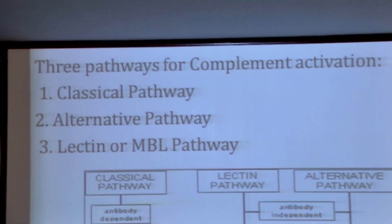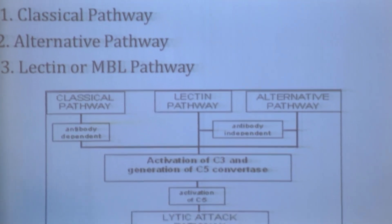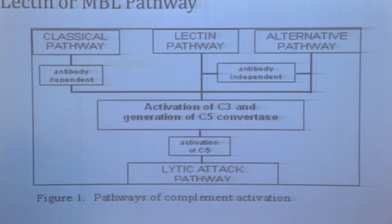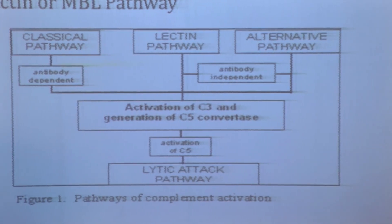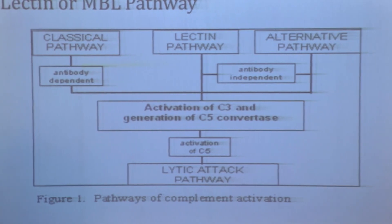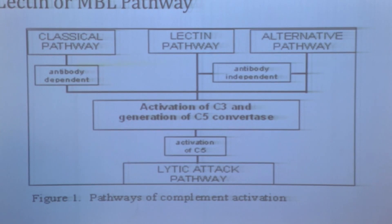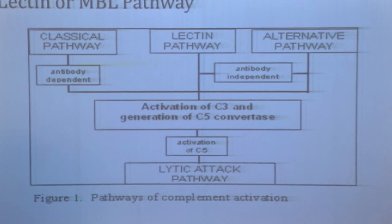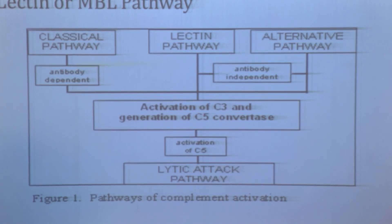Complement proteins are employed in three pathways: the classical pathway, the alternative pathway, and the lectin or MBL pathway. The classical pathway is induced by antigen-antibody complexes, while the lectin and alternative pathways are antibody-independent. All three pathways activate C3, which then induces activation of C5, followed by sequential addition of C6, C7, C8, and C9, forming the membrane attack complex (MAC), which leads to lysis of bacteria, cells, and tumor cells.